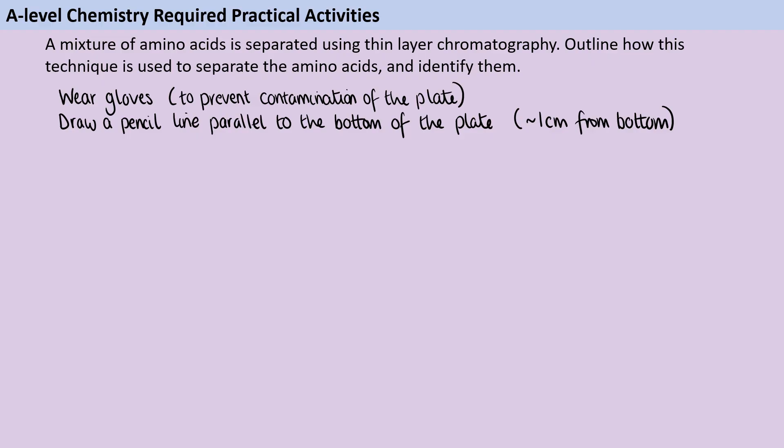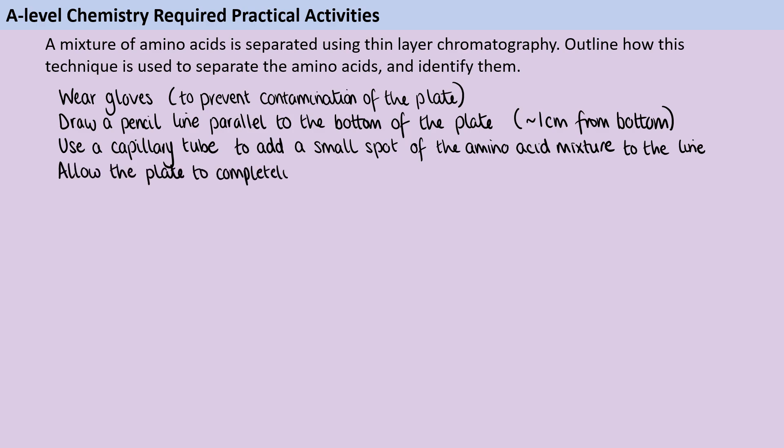Next we need to add our mixture that we're going to try and separate. We're going to do this using a capillary tube so that we can add a nice really small spot and we're going to add that spot of the amino acid mixture onto that pencil start line that we've drawn. Then it's important that we leave the plate to completely air dry before we actually do the chromatography.